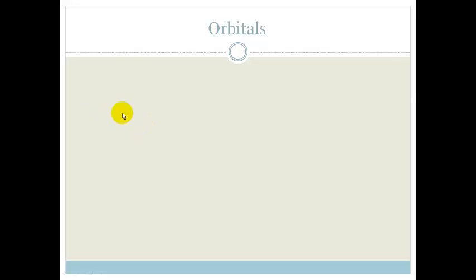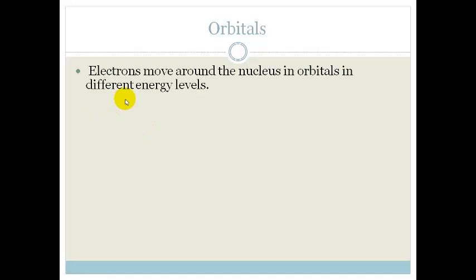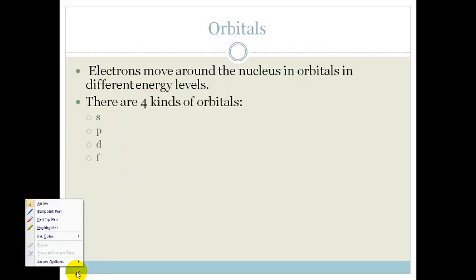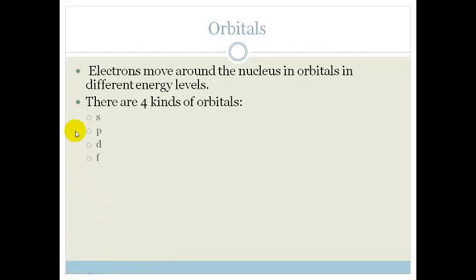So we've spoken about orbitals before. We've said that electrons move around the nucleus in orbitals in different energy levels. There are four kinds of orbitals: S orbitals, P orbitals, D orbitals, and F orbitals. Luckily for us, we don't have to worry about D orbitals and F orbitals. We just have to worry about S orbitals and P orbitals.